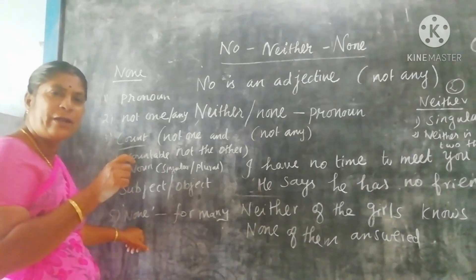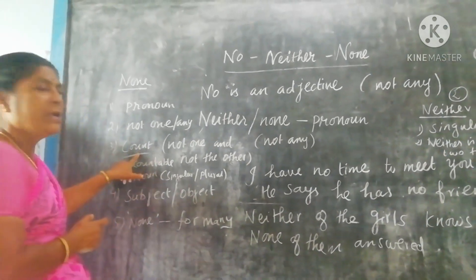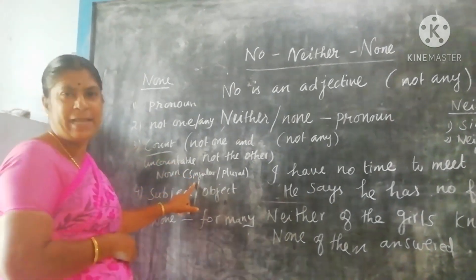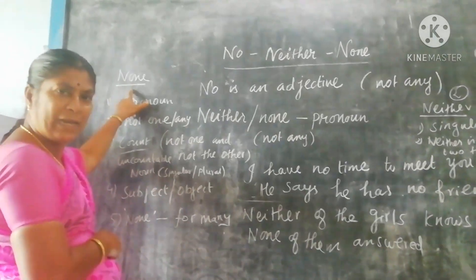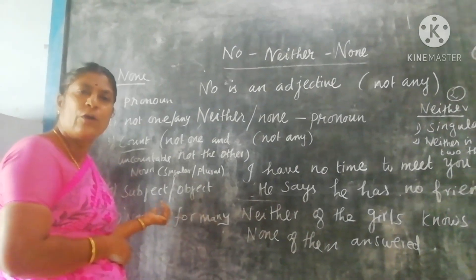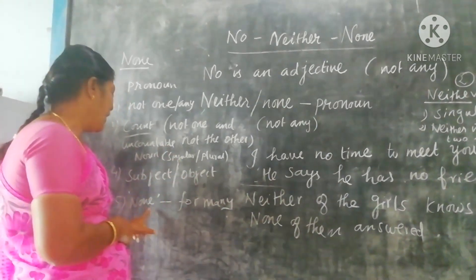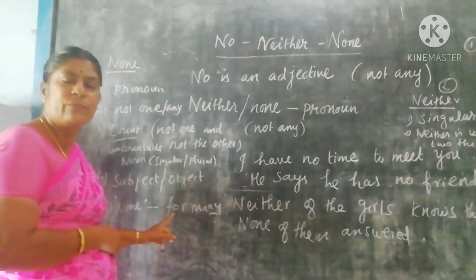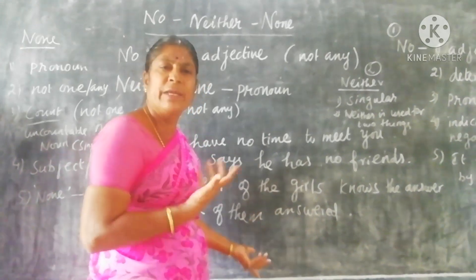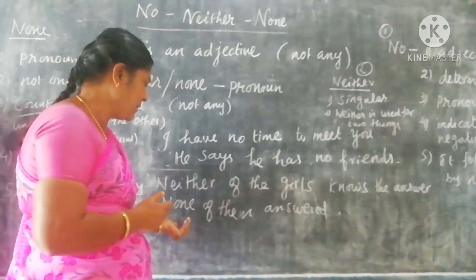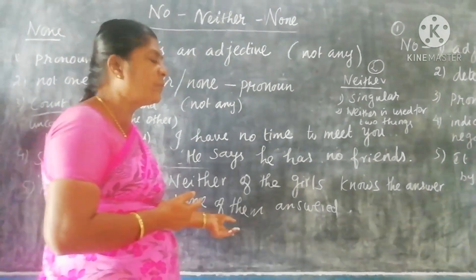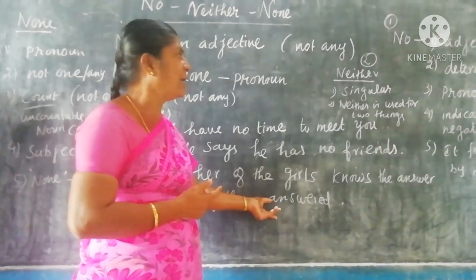The word none means not one or many. You can use it for countable and uncountable nouns, and it takes both singular and plural. It may be used as a subject or object, and none always refers to more than two. For example, none of them is the answer — that means nobody is the answer.